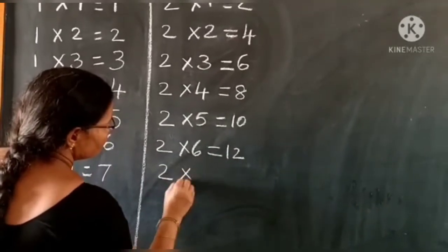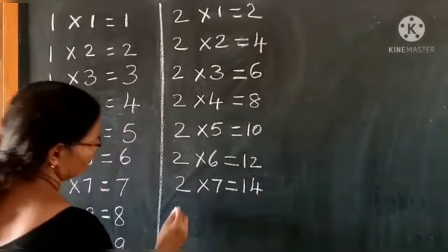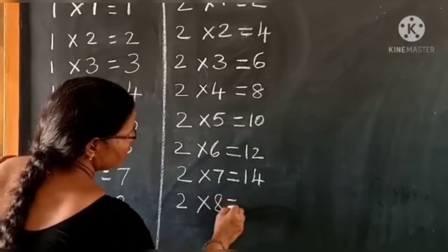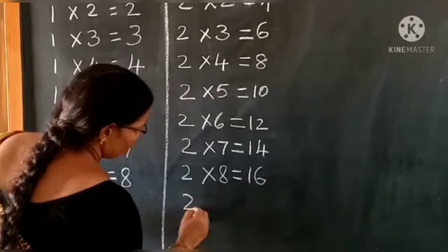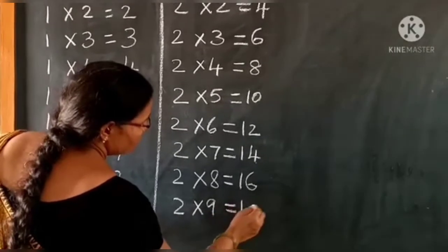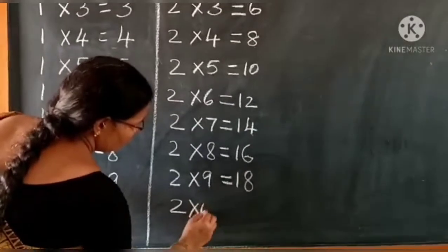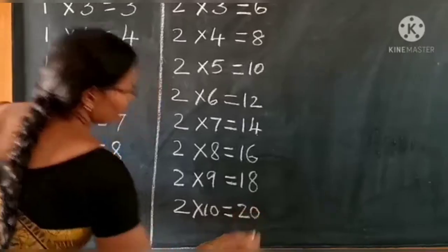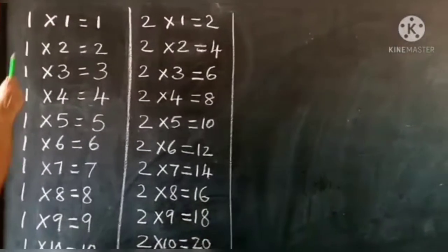Two sevens are fourteen, two eights are sixteen, two nines are eighteen, two tens are twenty. Children, shall we repeat once again?